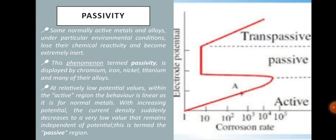Passivity: some normally active metals and alloys, under particular environmental conditions, lose their chemical reactivity and become extremely inert. This phenomenon termed passivity is displayed by chromium, iron, nickel, titanium, and many of their alloys. At relatively low potential values within the active region, the behavior is linear as it is for normal metals. With increasing potential, the current density suddenly decreases to a very low value that remains independent of potential — this is termed the passive region.